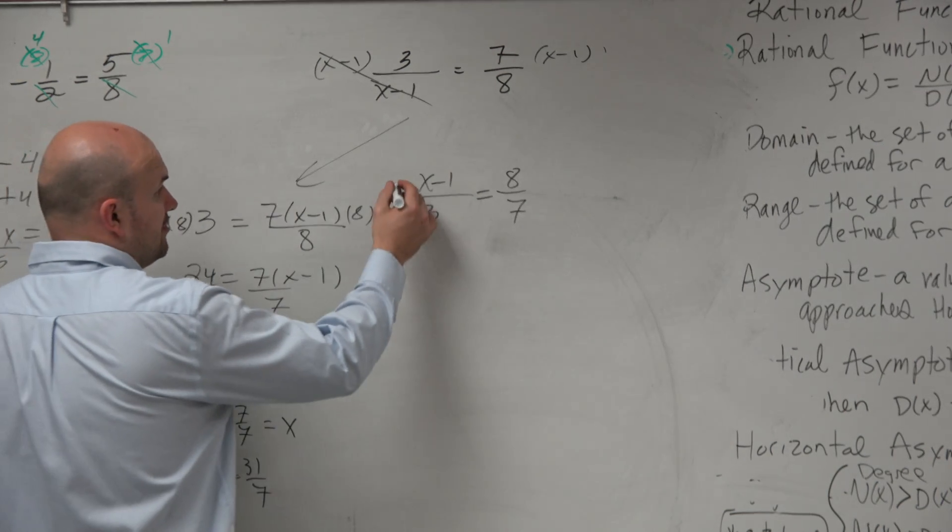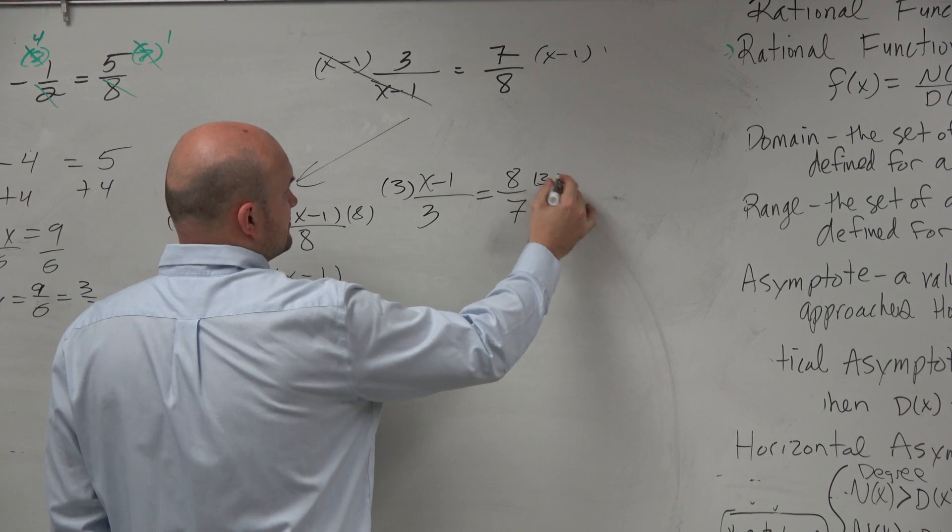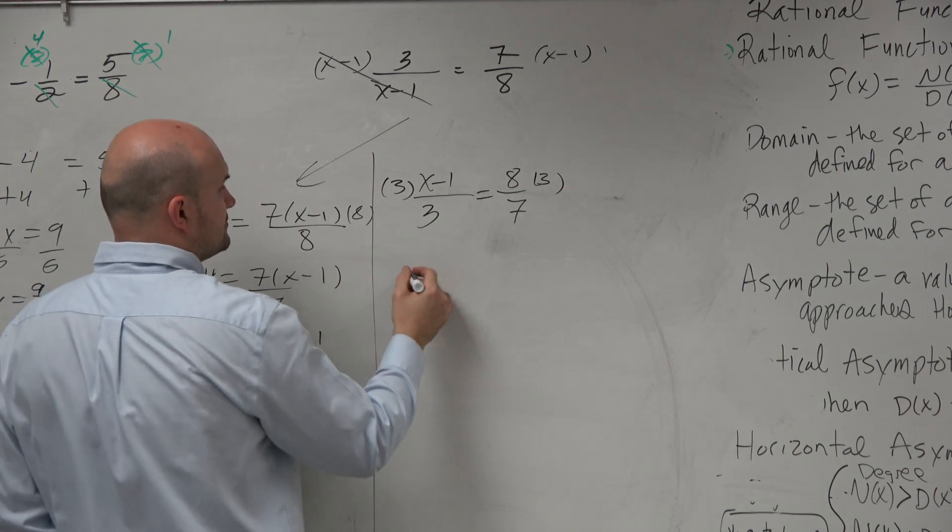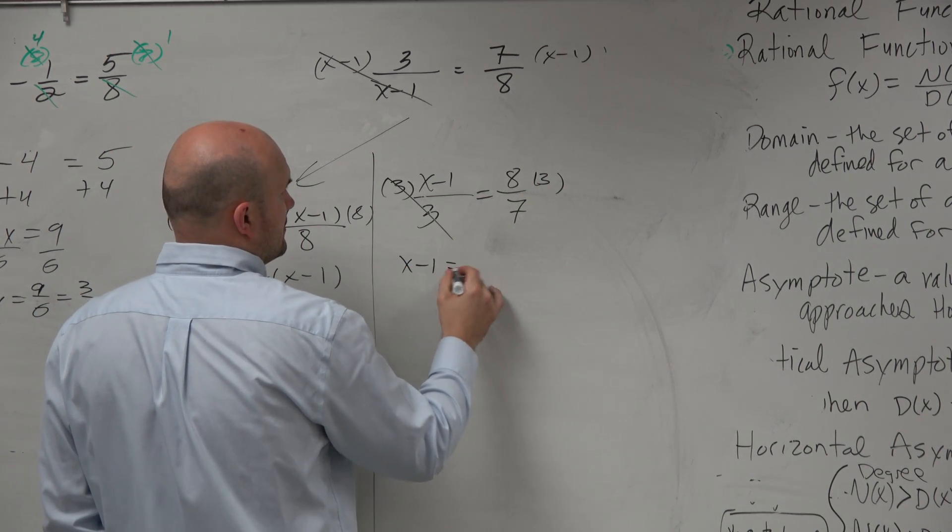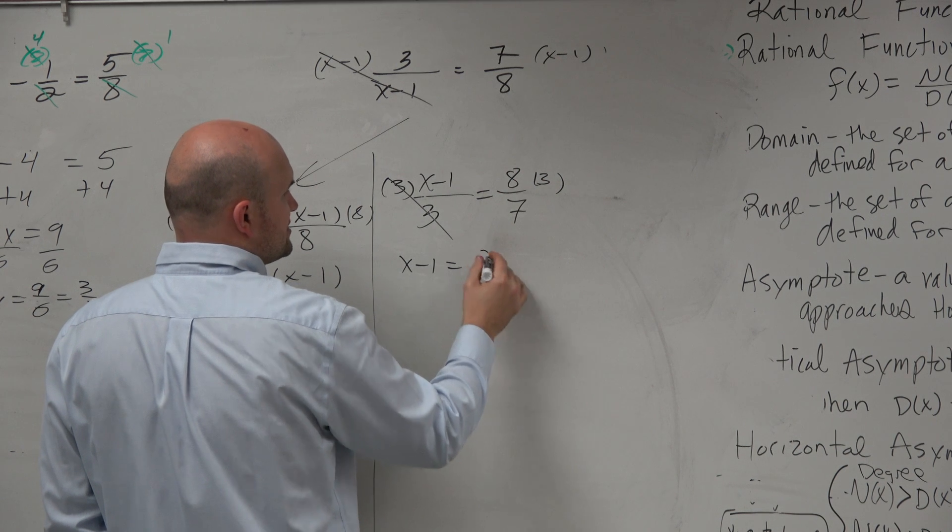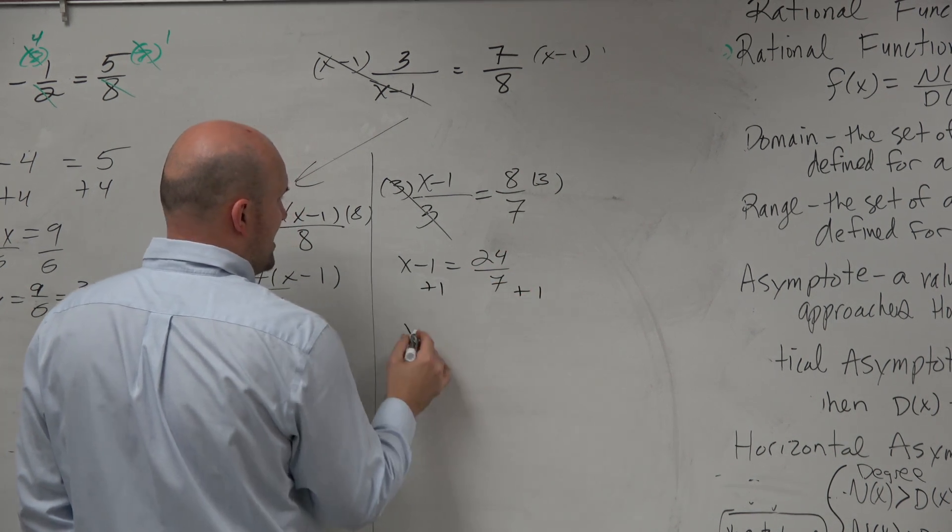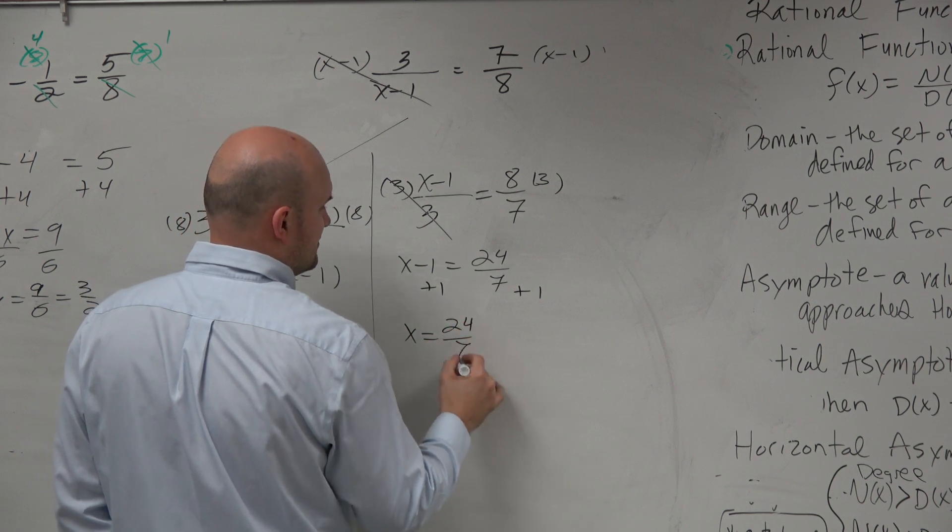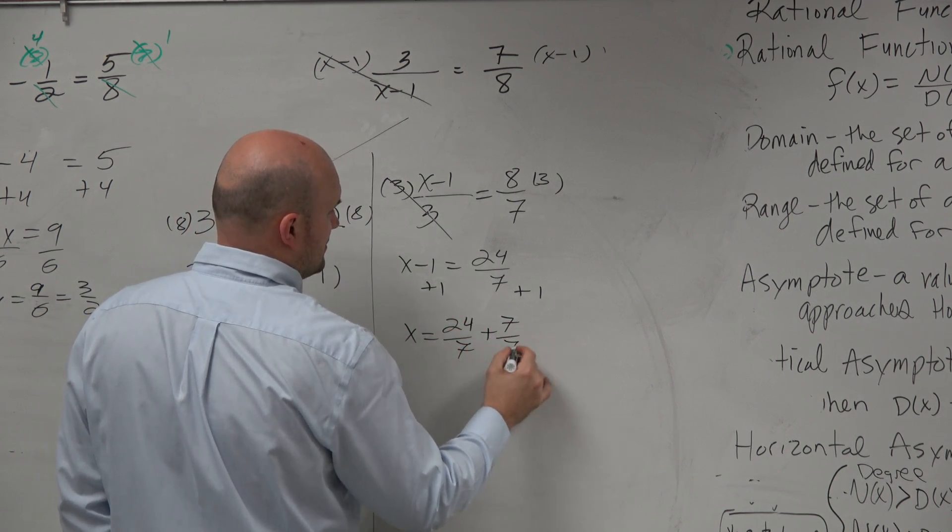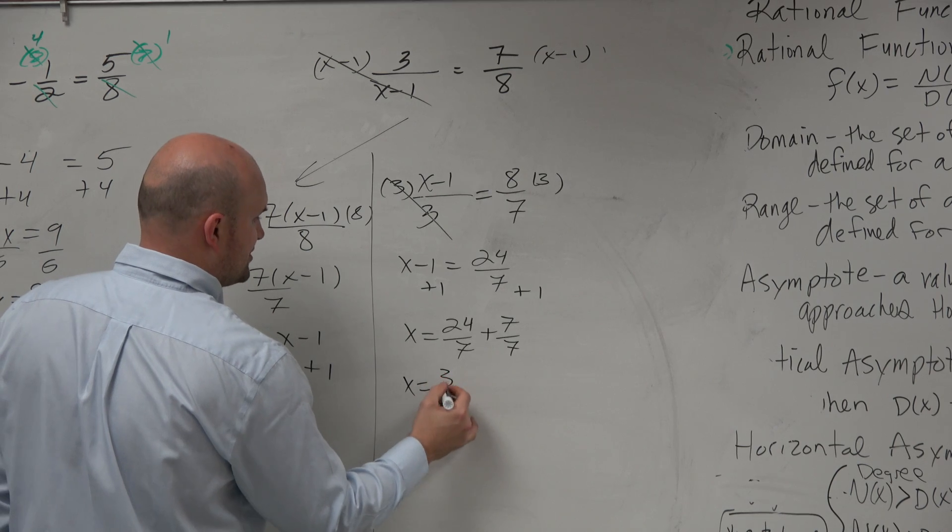Well, let's see. Multiply by 3 on both sides. That's 3, so that's 24 over 7. Hey. X equals 31 over 7.